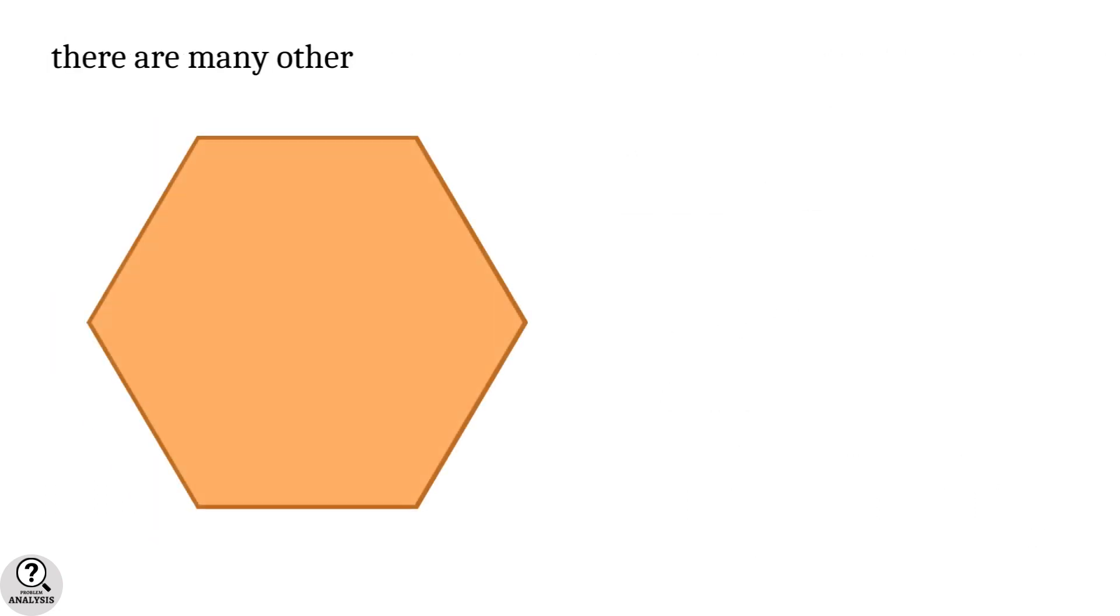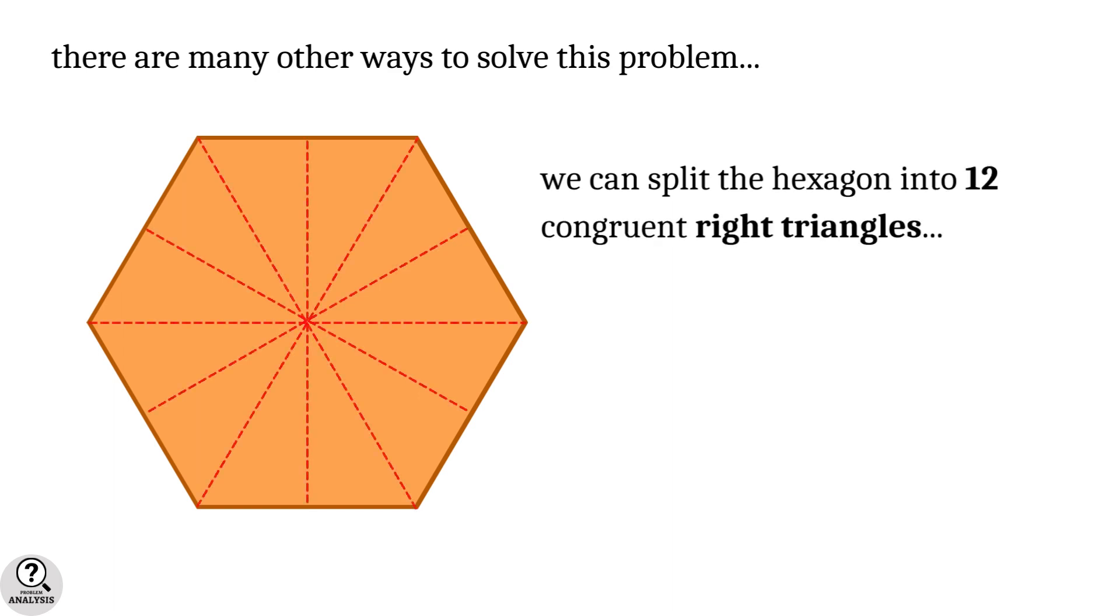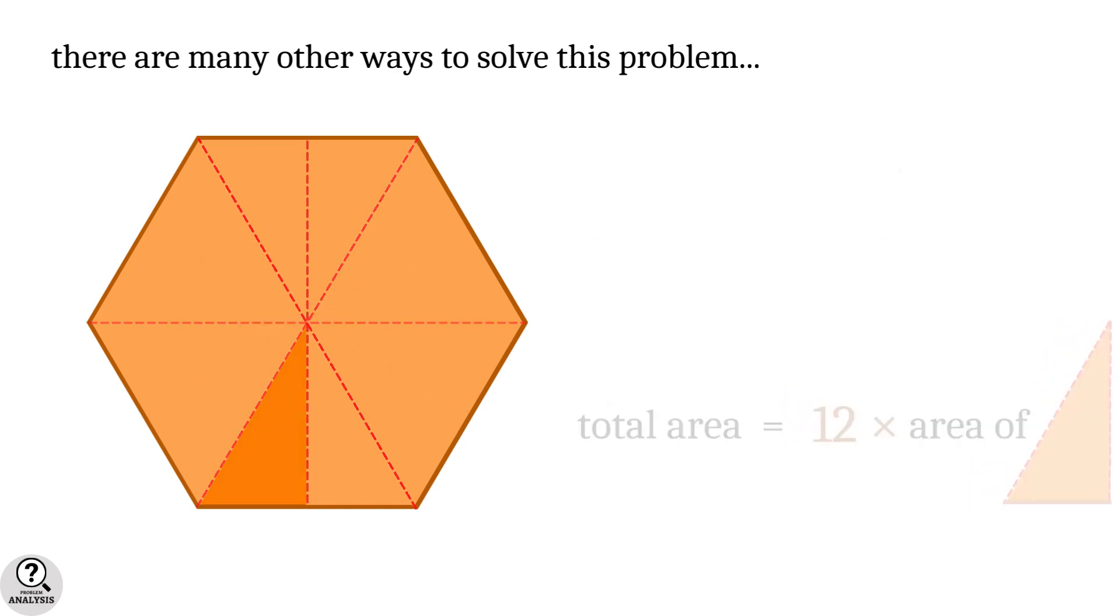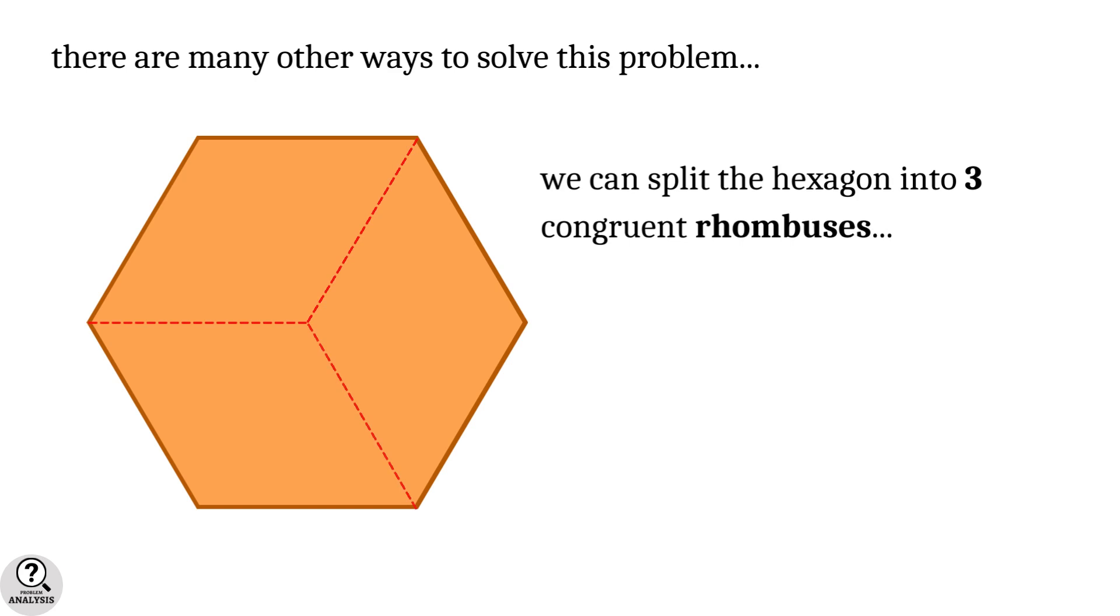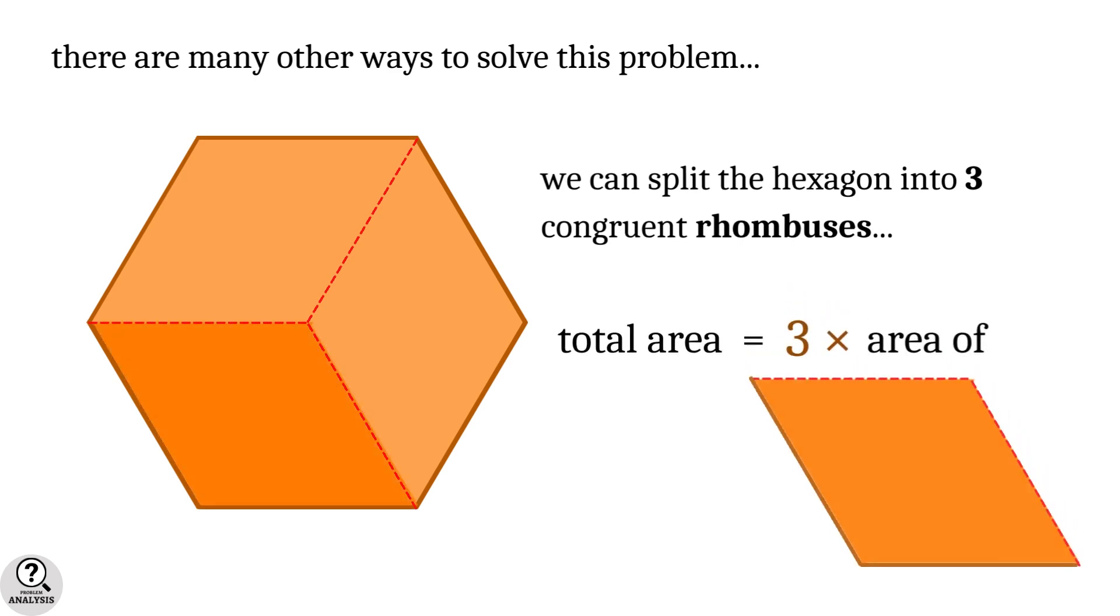In fact, there are many other ways to find the solution. We can split the hexagon into 12 congruent right triangles, so the total area will be 12 times the area of one such right triangle. Similarly, we can split the hexagon into 3 congruent rhombuses, so the total area will be 3 times the area of one such rhombus.